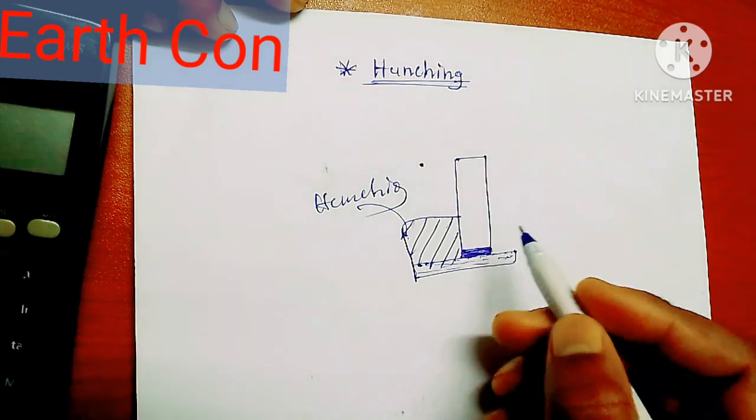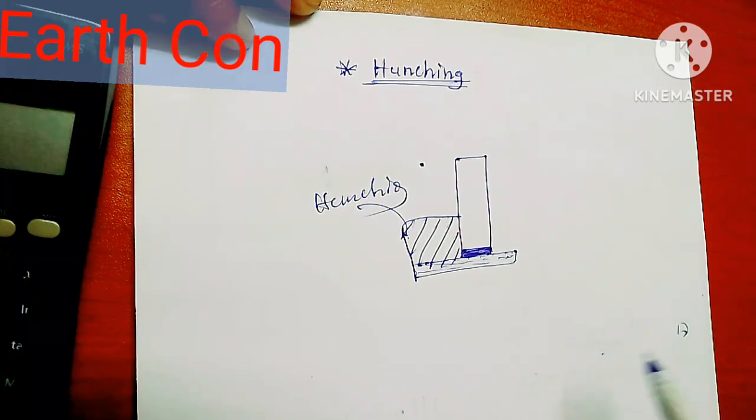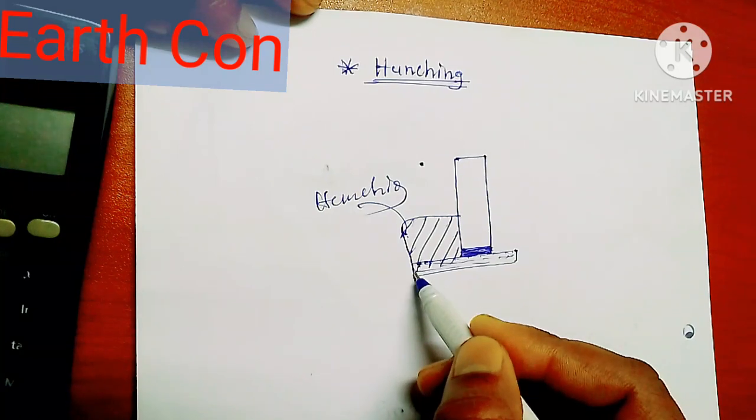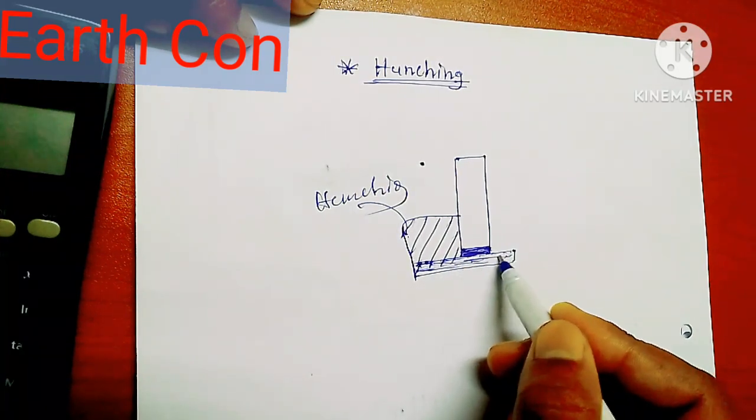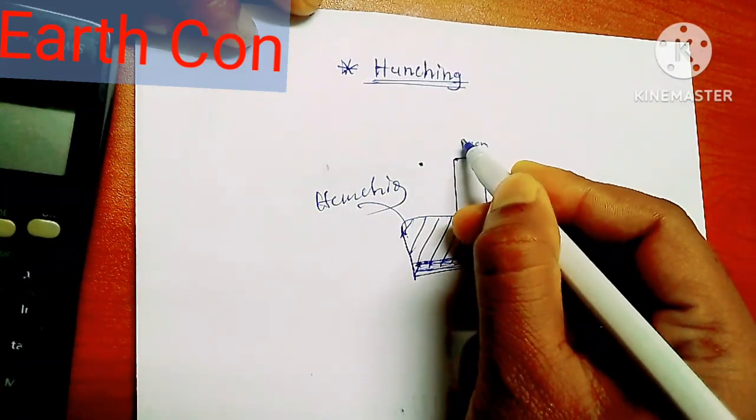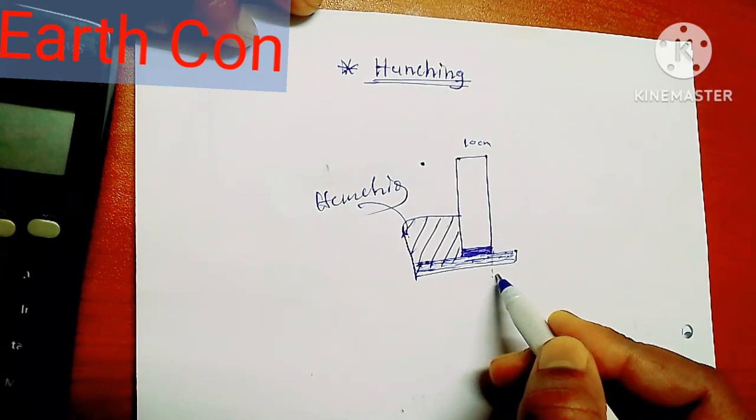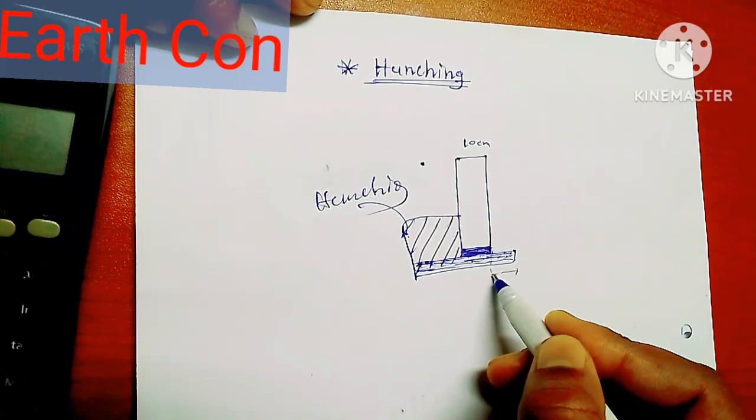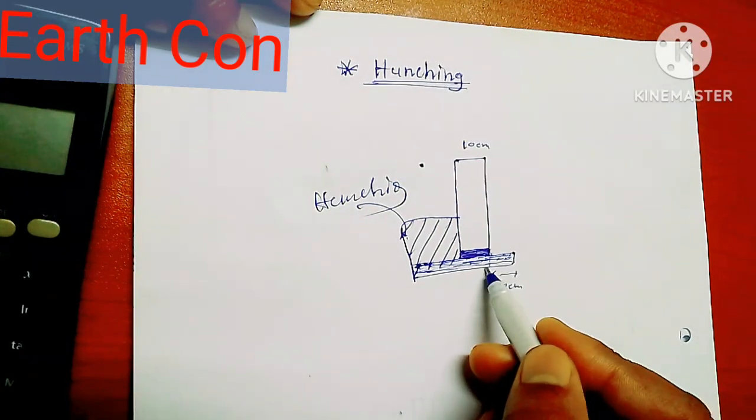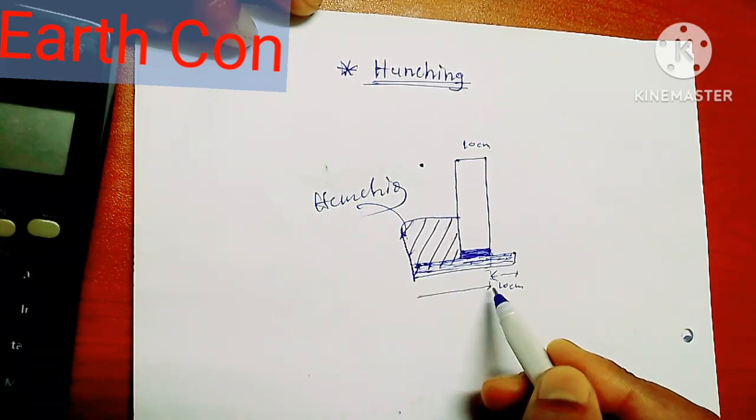When we will fix curb stone, before fixing the curb stone in the area, we need to do soil trace. After tracing up the soil, we have to do PCC first. One curb stone is 10cm. After 10cm, inside the curb stone we need 10cm extra PCC, and here minimum 20cm extra, and here extra. It means 30cm here and 30cm here extra.